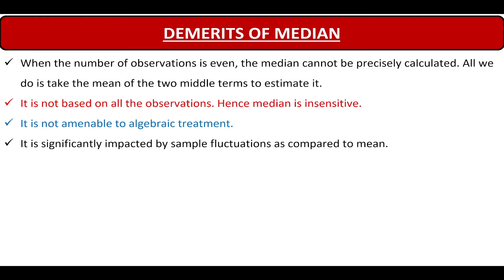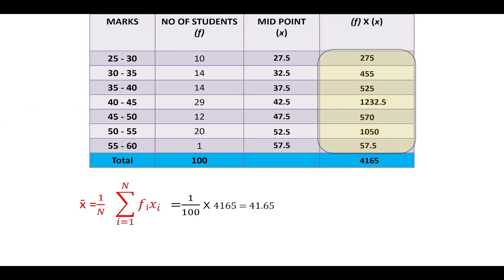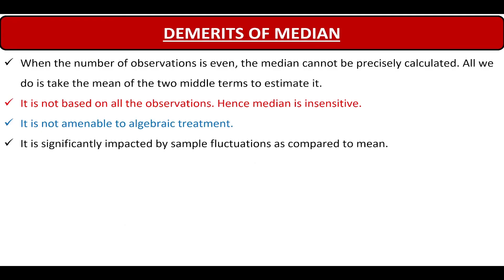And next, median is significantly impacted by sample fluctuations as compared to mean. When we discussed mean, we saw that even after changing values up or down, the value of mean did not get affected because the summation of f·x remained the same. But in case of median, we first have to arrange data in ascending or descending order. If we change this order or make some mistake in arranging them, then the value of median will change. That's why any small mistake will change the value of the median — it is significantly impacted by sample fluctuations as compared to mean.